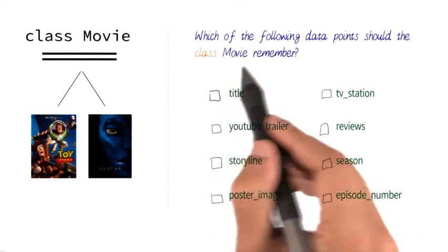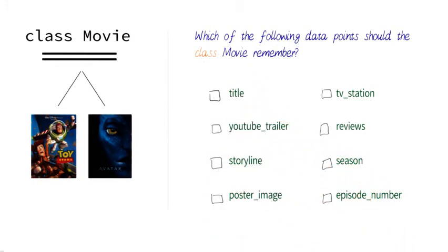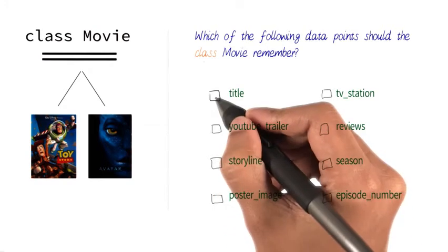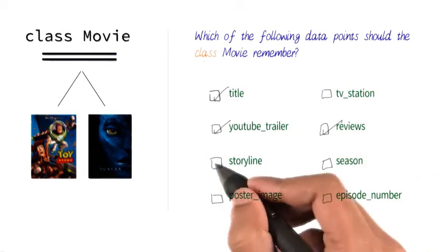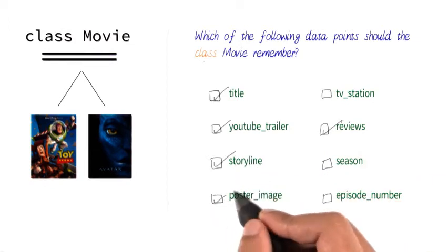So the truth is that the class movie can contain whatever we want it to contain. And in this case, I will pick the movie's title, its YouTube trailer, its reviews, the storyline, and its poster image.